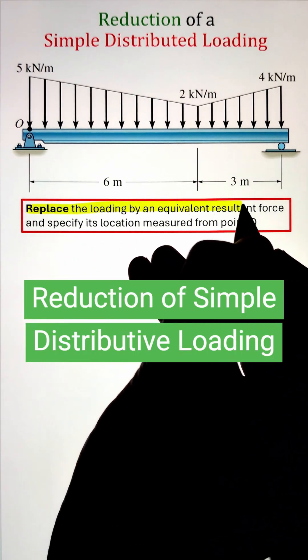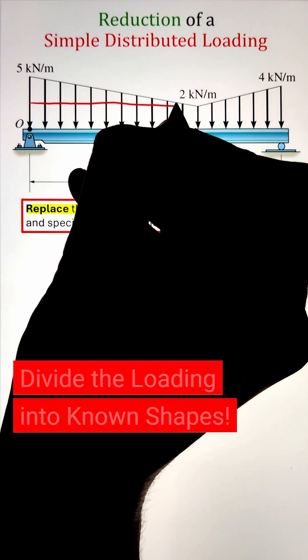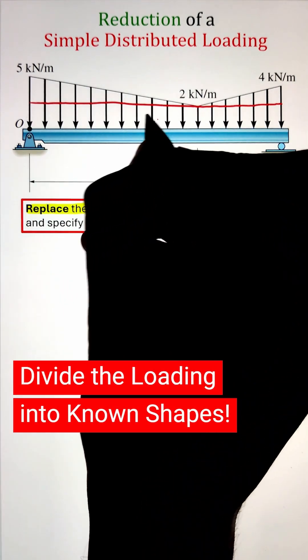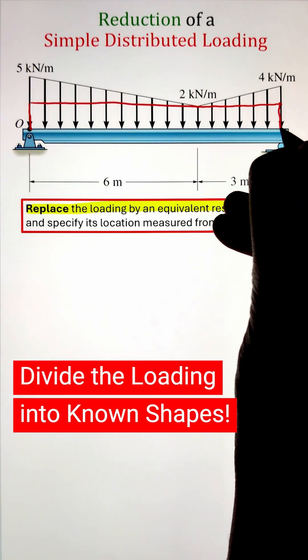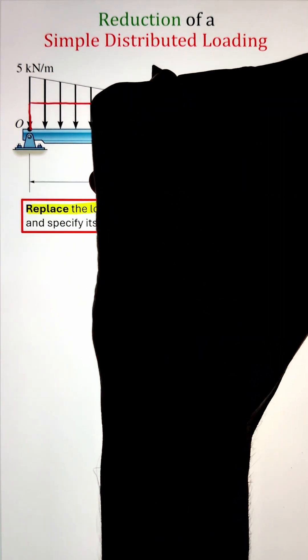In order to replace the loading acting on a beam with an equivalent resultant force and specify its location, we can start by converting the distributive loading into known shapes and then calculating the areas of these shapes. These areas basically convert the distributive loading into a point load.